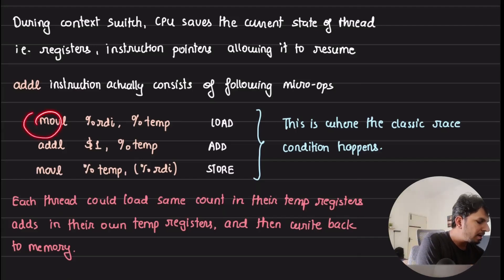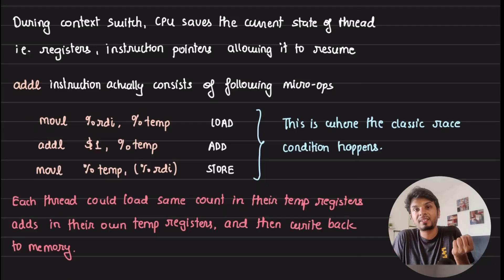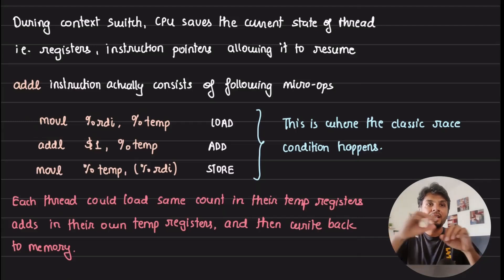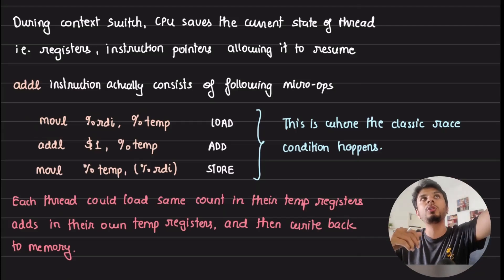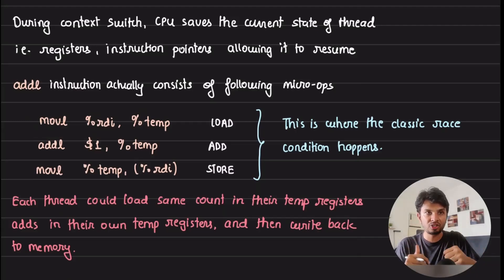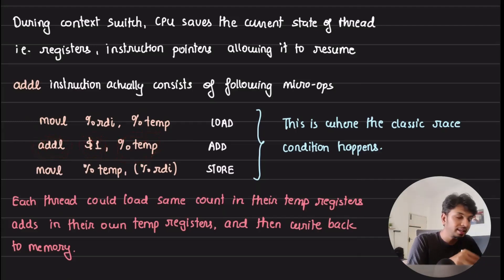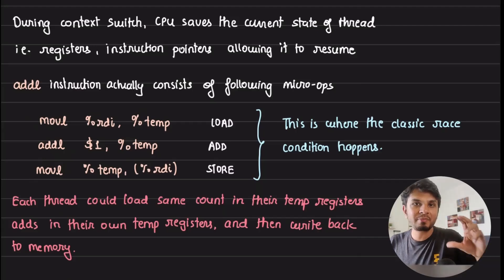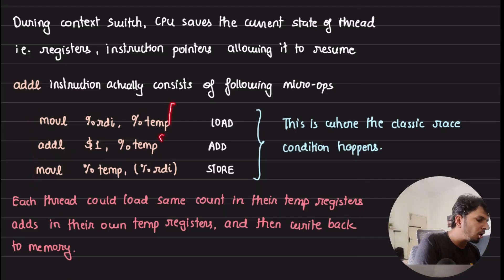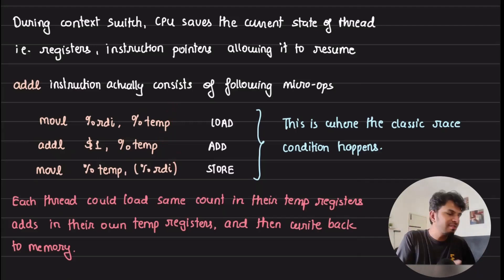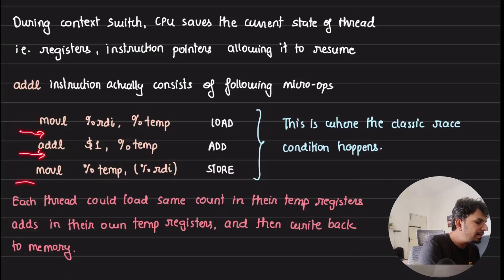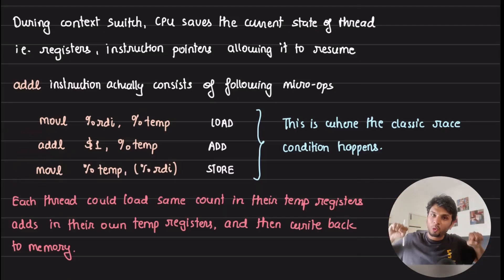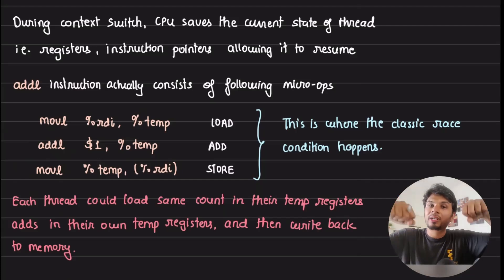These three micro-operations execute on the CPU and they are atomic in nature. The first micro-operation: movl (%rdi), temp — every thread has its own temporary set of registers, so it loads the actual value of count from memory into a temporary register. Then addl on that temporary register — adds one. Then movl from that temporary register back to %rdi — writes it to that memory location. The CPU will not context switch while executing each individual micro-operation, but it can context switch between them.